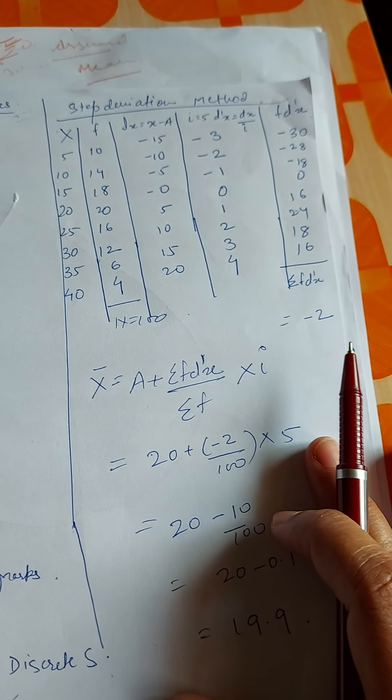Now we calculate fd'x: 10 into minus 3 is minus 30; 14 into minus 2 is minus 28; 18 into minus 1 is minus 18; 20 into 0 is 0; 16 into 1 is 16; 12 into 2 is 24; 6 into 3 is 18; 4 into 4 is 16. When we add all these numbers, sigma fd'x equals minus 2. Putting into the formula: assumed mean is 20, sigma fd'x is minus 2, frequency is 100, and interval is 5. The answer is 19.9 marks.